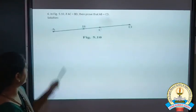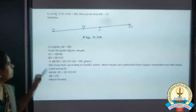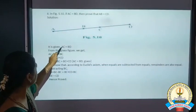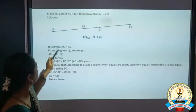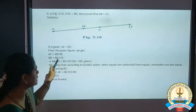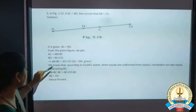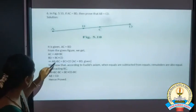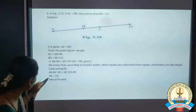Next question: in the figure AC equals BD; prove that AB equals CD. AC can be written as AB plus BC, and BD can be written as BC plus CD. Since AC equals BD, by Euclid's axiom: AB plus BC equals BC plus CD. BC is common on both sides, so subtracting BC from both sides, BC cancels and we get AB equals CD, which is what we had to prove.